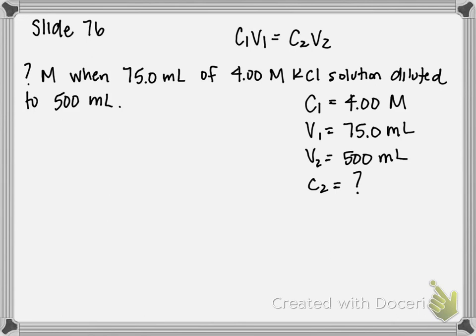So if we plug all of these values into the solution-dilution equation, we get 4 molar times 75 milliliters equals C2 (not C1, sorry) times 500 milliliters.